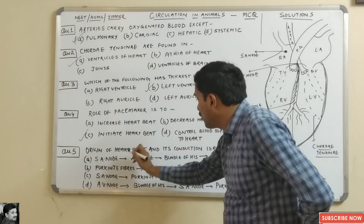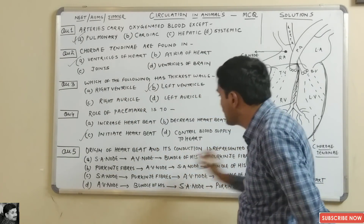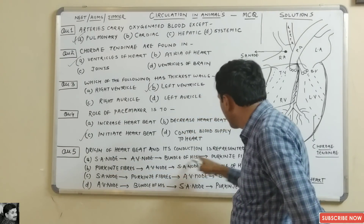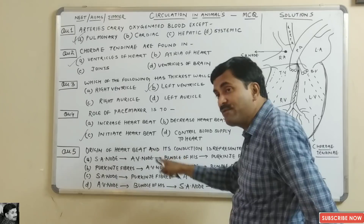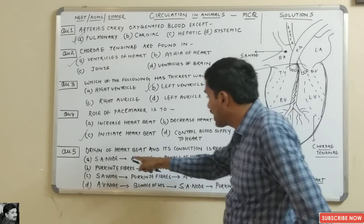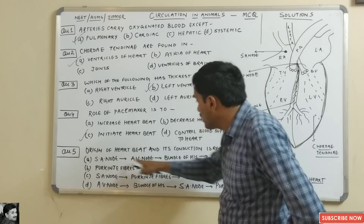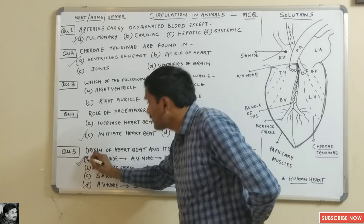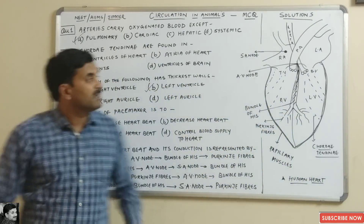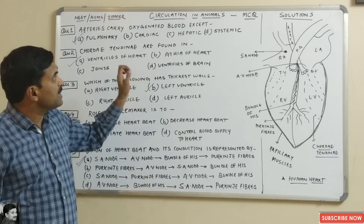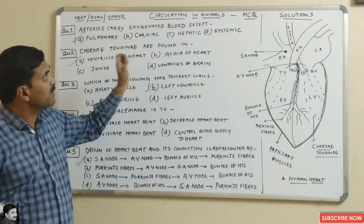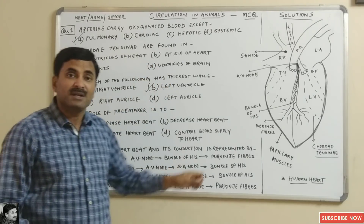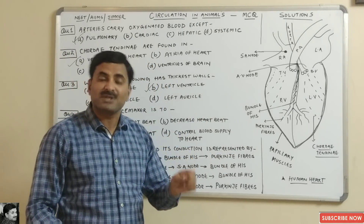The correct sequence for the origin and conduction of the heartbeat is: SA node → AV node → Bundle of His → Purkinje fibers. So the answer is the first option. This video covered MCQs on circulation in animals — we will be coming with new videos with more MCQs. Thanks a lot.